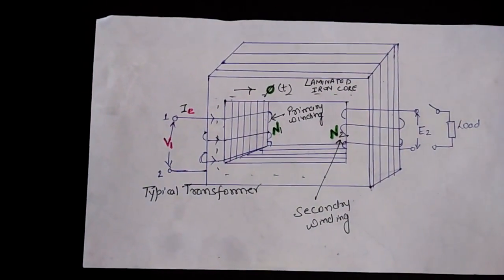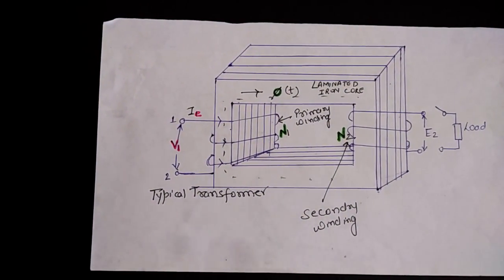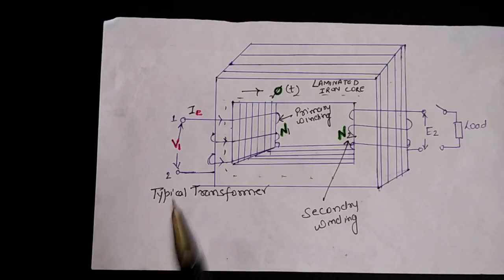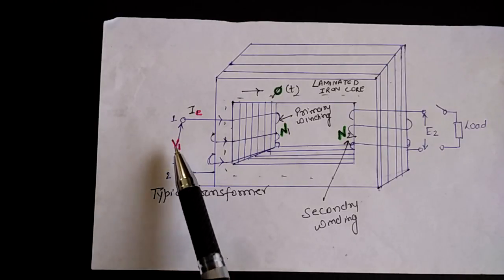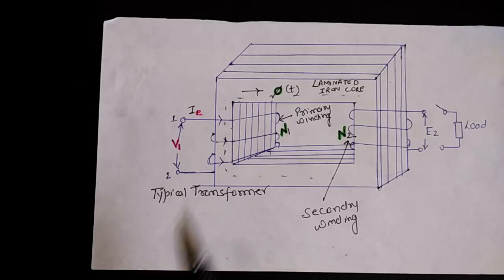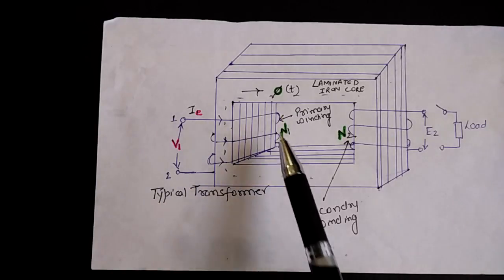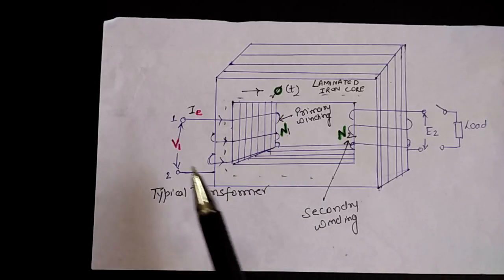Next, I'm explaining to you the EMF equation. First, you should know some facts about it. V1 is the applied voltage in the primary having n1 turns.